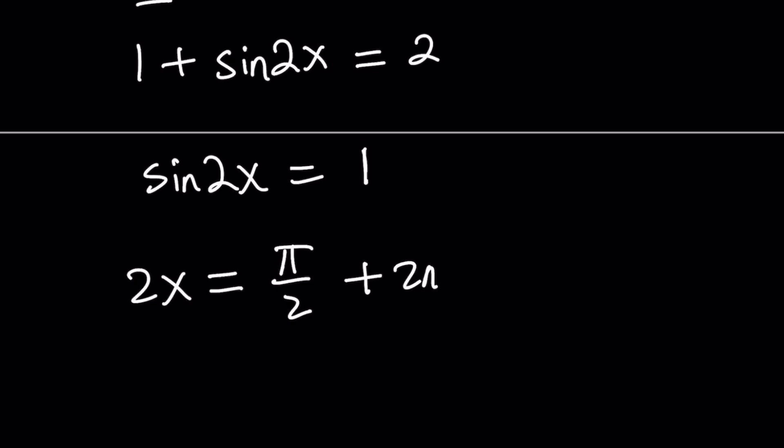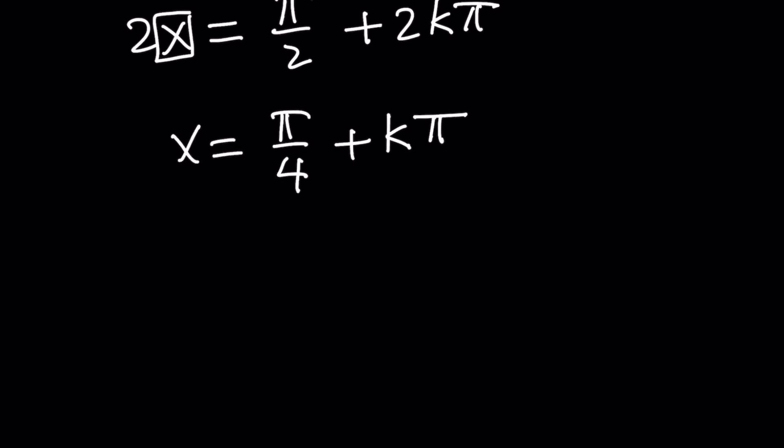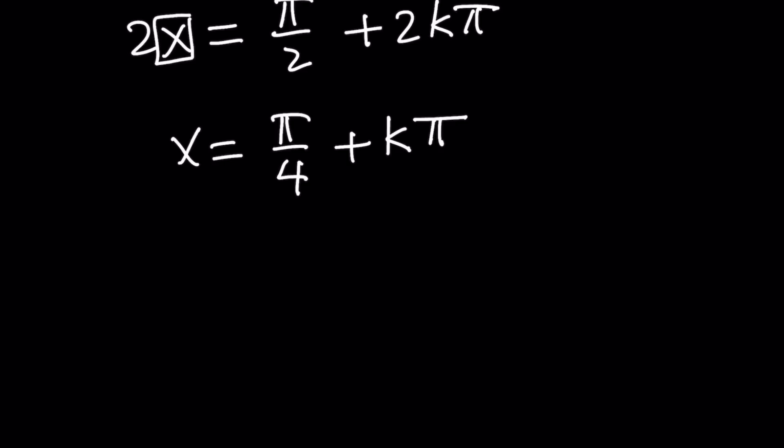Now at this point because we're trying to solve for x, we'll divide both sides by 2. Let's do it and then plus k pi.